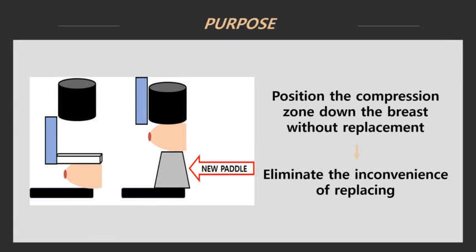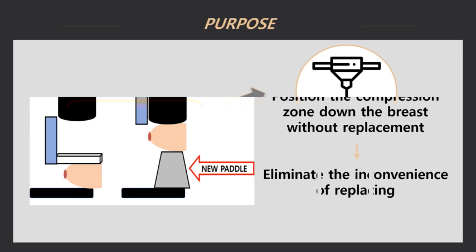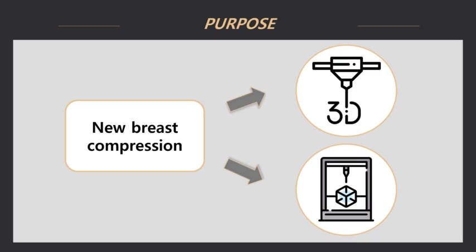Currently, spot compression uses a method of applying pressure from the top after changing the basic pressure pedal from the conventional filming method to the spot pressure pedal. The new method proposed in this study is not to replace the compression pedal as before, but to place the partial pressure pedal below the region of interest and then press it down with the basic compression pedal above. If the overall shape and surface of the compression rod are not uniform during 3D printing, images can be mistaken for tumors due to artifacts. This point should be designed with a flat, even density.